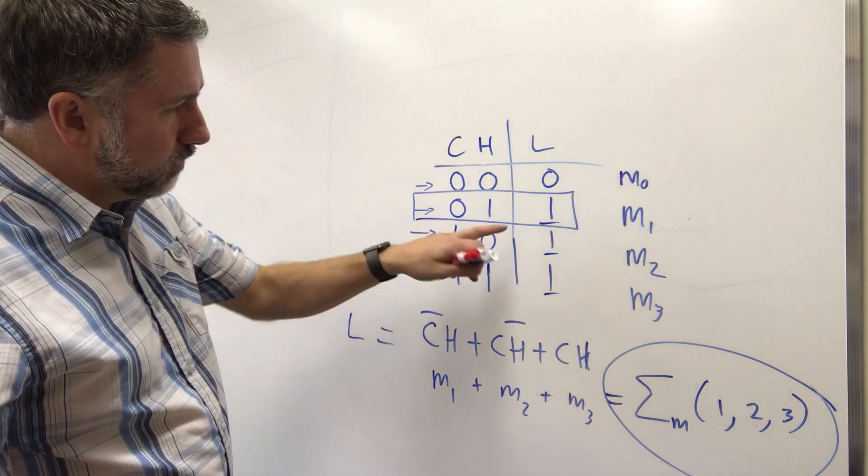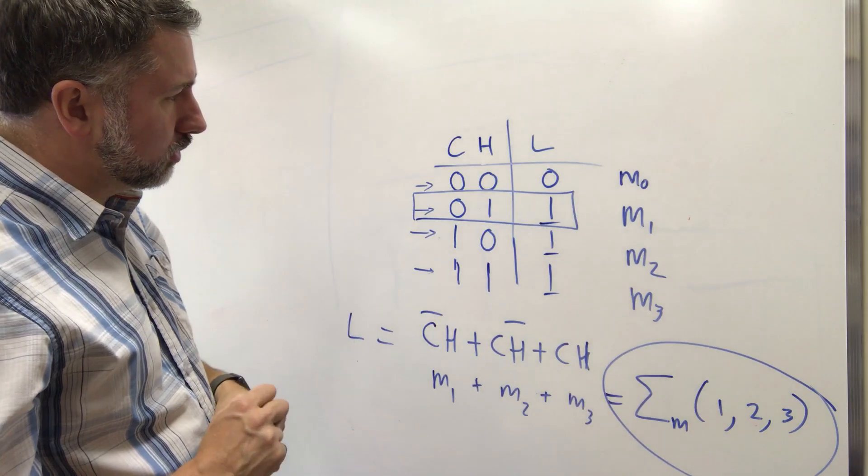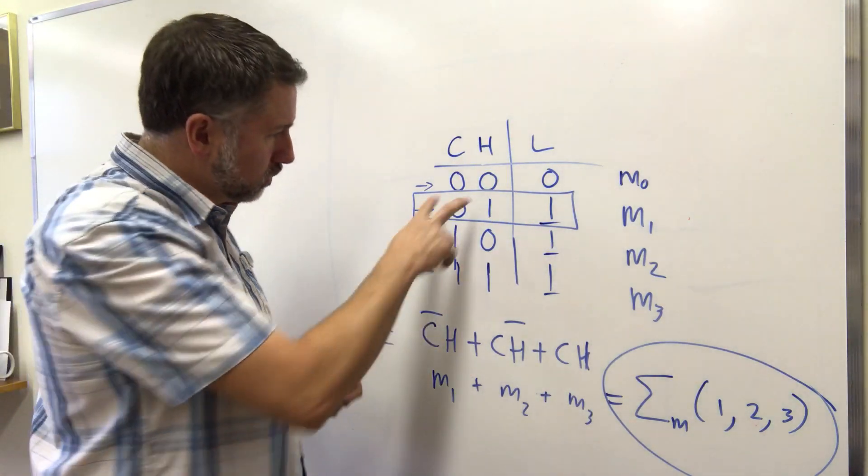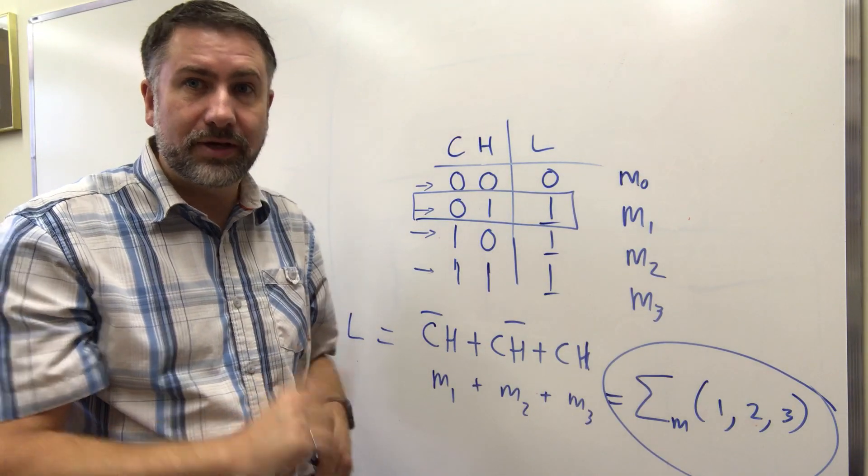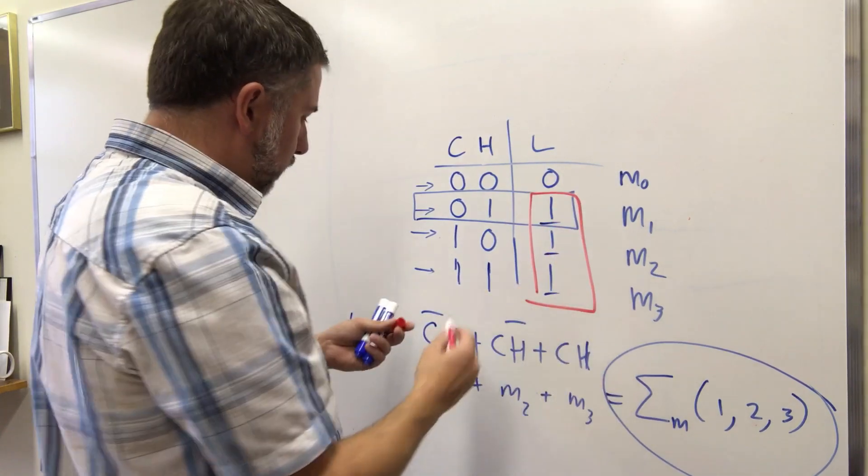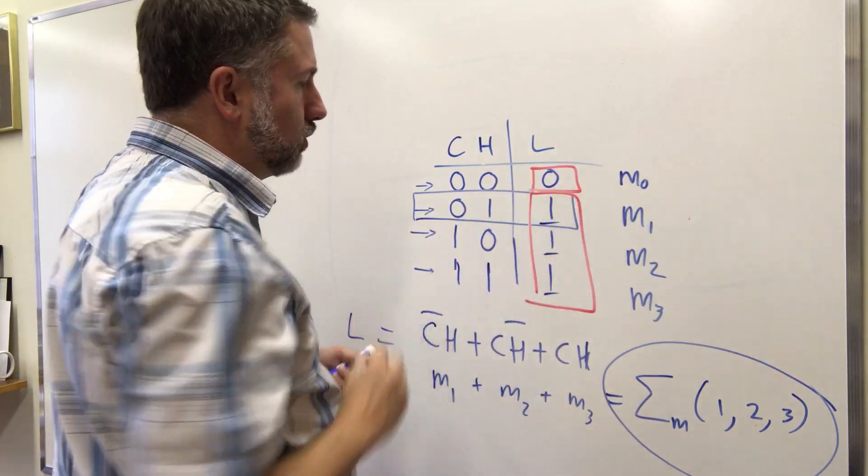So this is minterms and they correspond to the places in the circuit where, or the places in the function where the output would be 1 corresponding to one set of input combinations. Now there's another thing we can look at is instead of looking at the ones which are here, we can look at the zeros which are there.